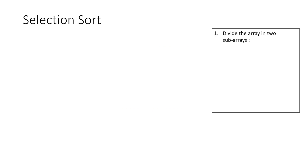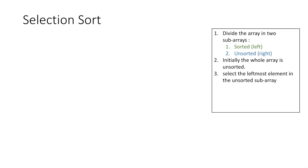So now let's see how selection sort works. Firstly, we divide the array of elements into sub-arrays — sorted and unsorted — where initially we consider the whole array to be unsorted. Element by element we sort the array, increasing the size of the sorted sub-array and decreasing the size of the unsorted sub-array. For that, we select the leftmost element in the unsorted sub-array and swap it with the smallest element in the unsorted sub-array.